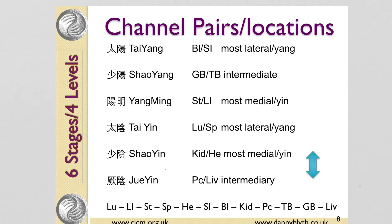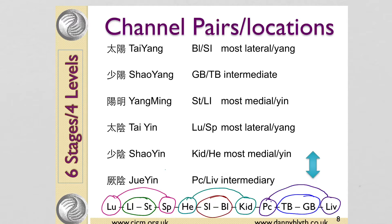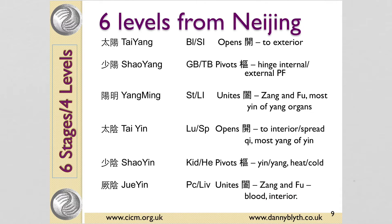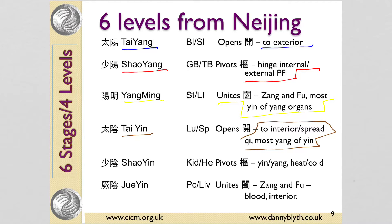Yang Ming, Tai Yang, and Shao Yang are next to each other, and Tai Yin, Shao Yin, and Jue Yin make up the other three pairs. The Nei Jing describes these pairs of channels as opening, pivoting, or uniting. Tai Yang opens to the exterior. Shao Yang is the hinge — we'll see how this works later in terms of infectious disease. Yang Ming unites, being the most yin of the yang organs, the digestive system. Tai Yin opens, spreading Qi around the body — the most yang of the yin organs, the lung and the spleen. The Shao Yin pivots — think of the heart and kidneys as the central pivot, the control of yin and yang and heat and cold in the body. And the Jue Yin unites — unites the blood, unites the interior.